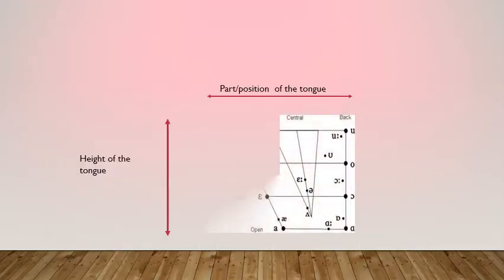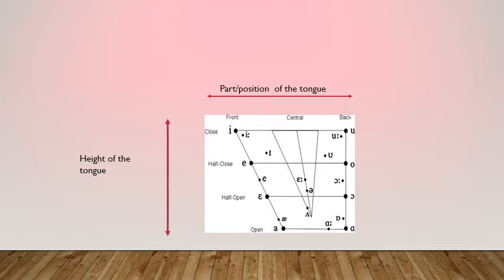Now let us see how we are going to classify these vowel sounds or monophthongs. We use the labels: front close, front half close, front half open, and open. Close, half close, half open, and open describe the height of the tongue. Close means it is closer to the hard palate; half close means it is a little below the hard palate; half open position will be still lower; open position means the tongue does not go towards the hard palate at all. Front, central, and back describe the part or position of the tongue used.